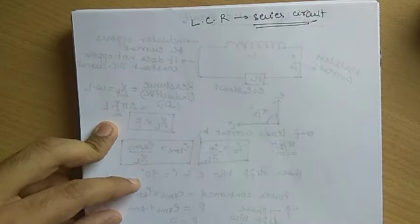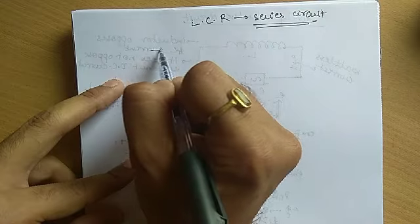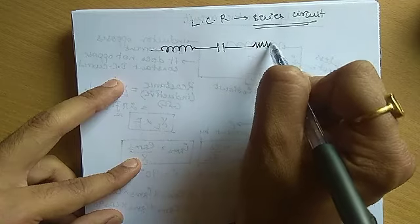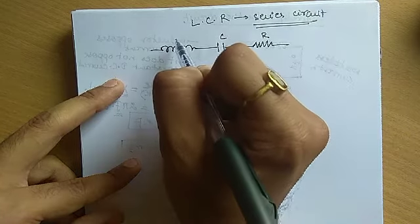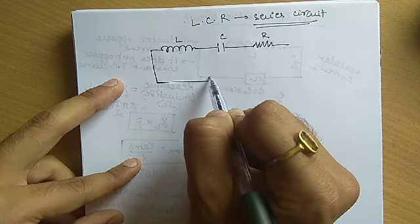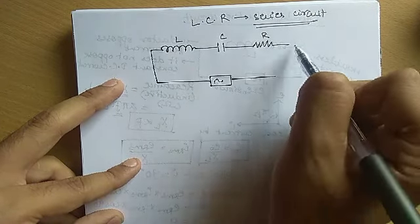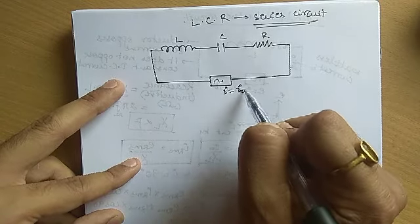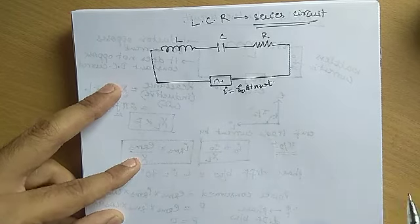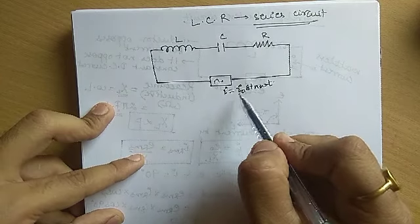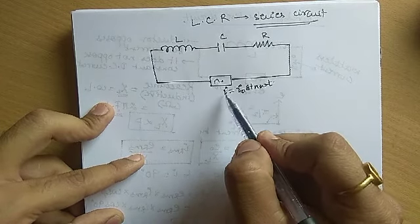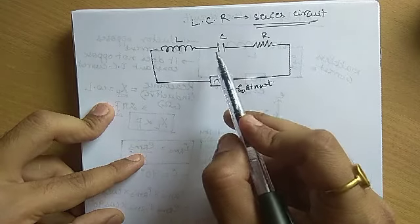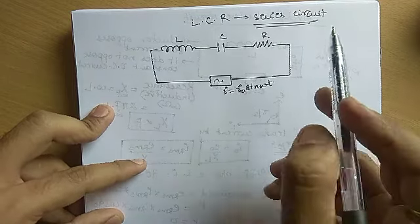In this video we will start off with the LCR series circuit. We have an inductor, capacitor C, and resistor R connected to an AC source. The AC source can be written as I₀ sin(ωt) or E₀ sin(ωt), but I and E cannot be in the same phase when it comes to R, L, and C — the phases would be different.